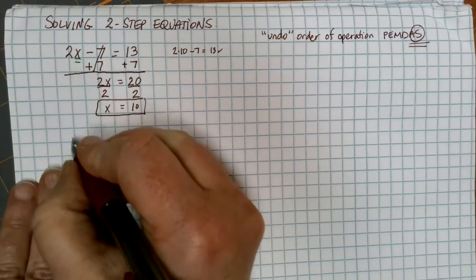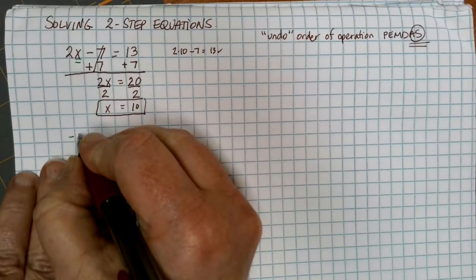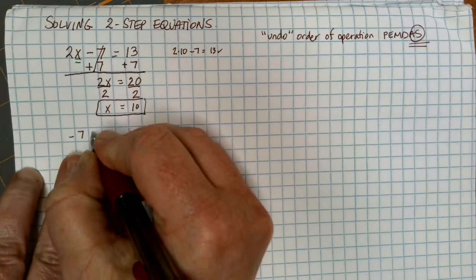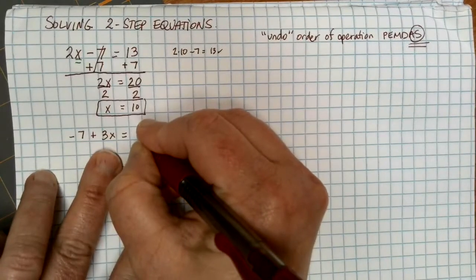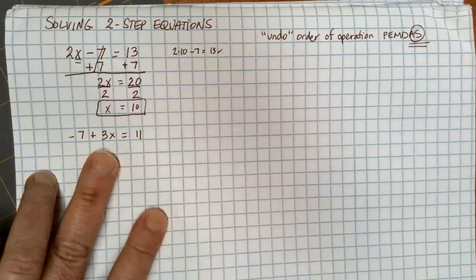Let's try a couple others here. Let's suppose that I have negative 7 plus 3x equals 11.